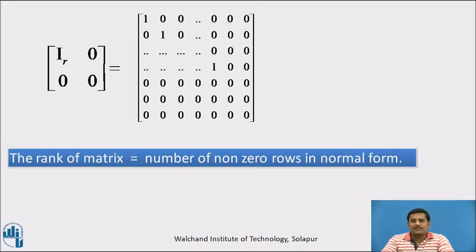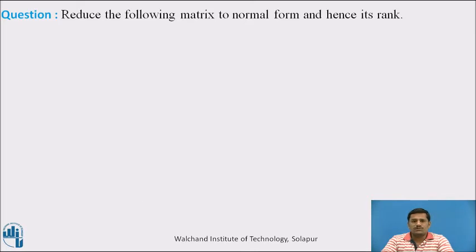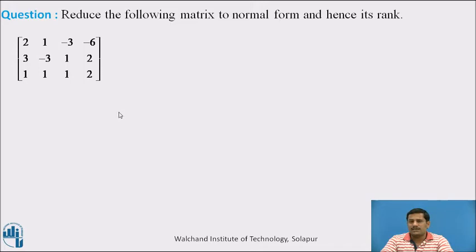Once we get the normal or canonical form, the rank of the matrix is defined as the number of non-zero rows present. Simply count the number of non-zero rows — that will be the rank of the corresponding matrix. Let us consider one question: reduce the following matrix to normal form and hence find its rank.